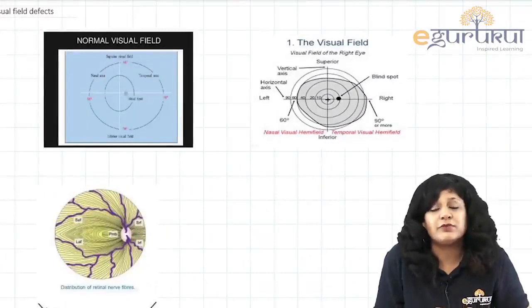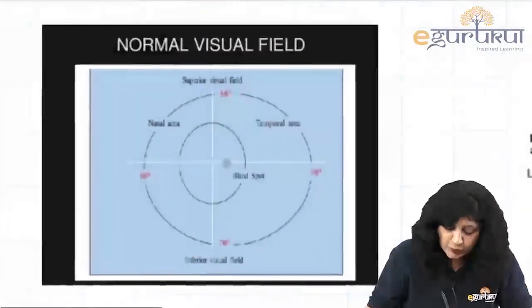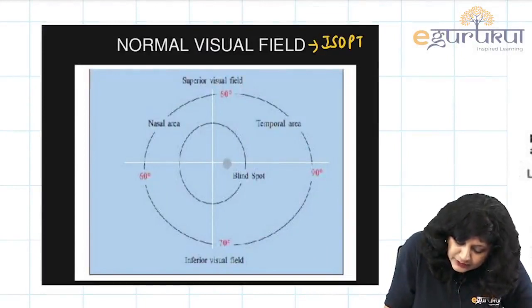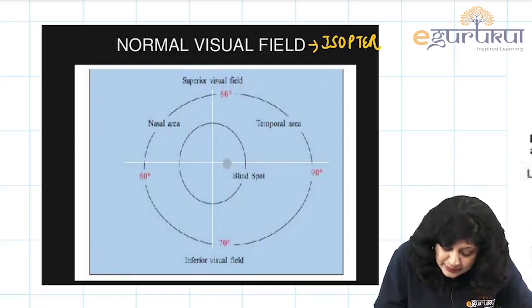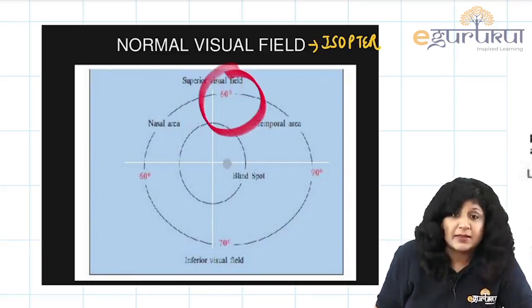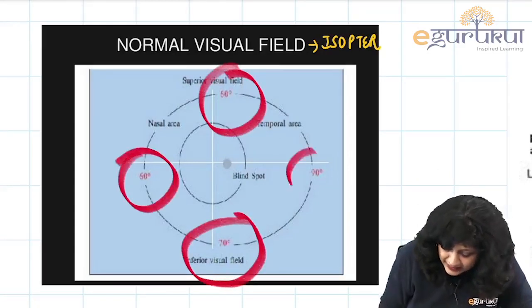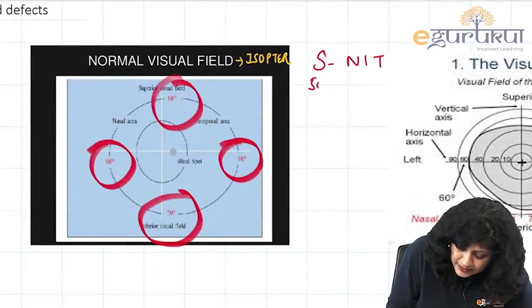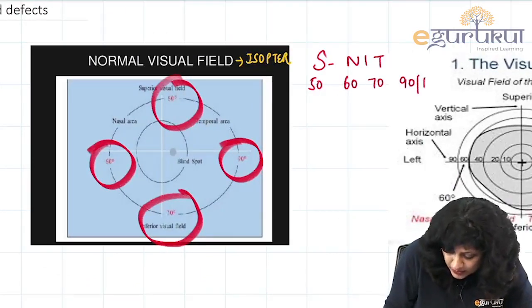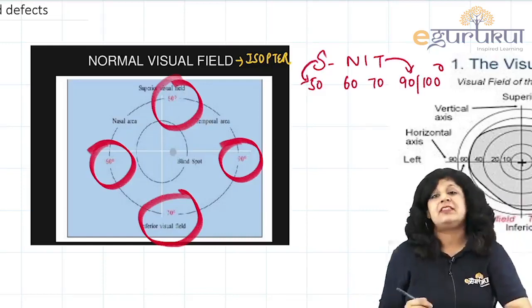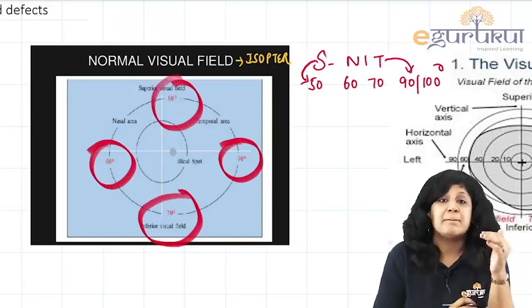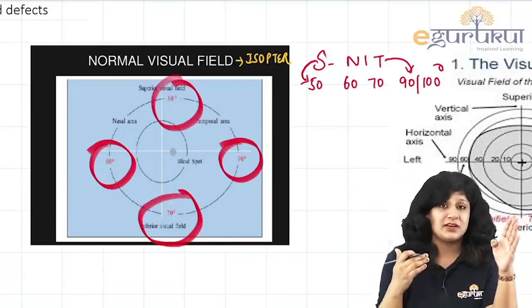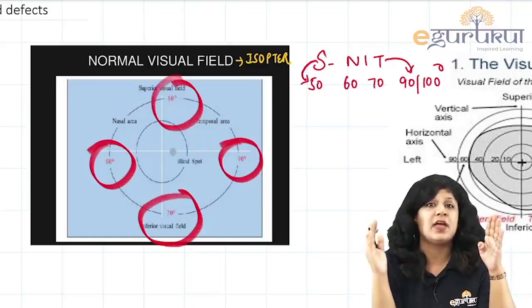The total visual field is defined by isopters — the total area of vision. You need to remember: superiorly 50 degrees, then 60 degrees nasally, 70 degrees inferiorly, and 90 to 100 degrees temporally. Maximum vision is in the temporal field while the minimum is in the superior field.